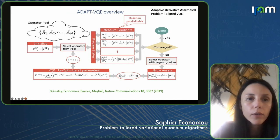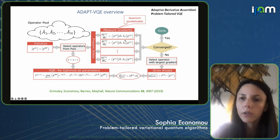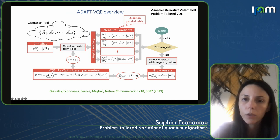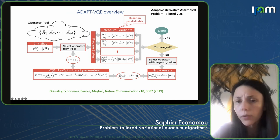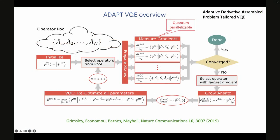Here is a flowchart of how this works. We have the operator pool, then a step where we measure gradients — which can be parallelized across different quantum computers. If all gradients are zero you're done; in practice we set a threshold so if the gradient vector is below that threshold we stop. Otherwise we select the operator with the largest gradient, append it onto the circuit, re-optimize all parameters up to that point, and repeat. Once an operator is used, it remains available in the pool for reuse. We pick the next operator with the largest gradient and keep going.